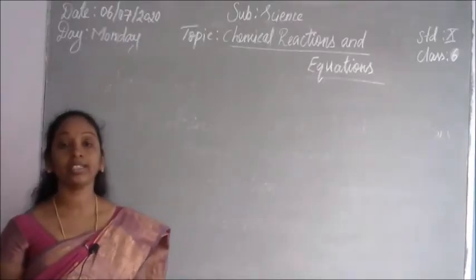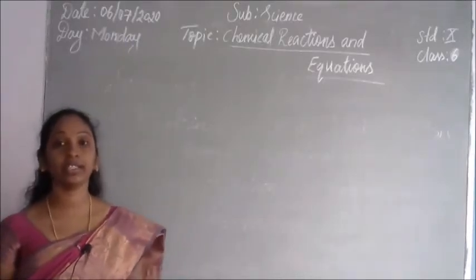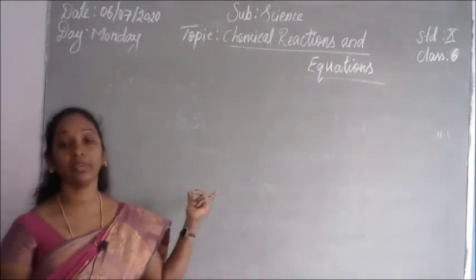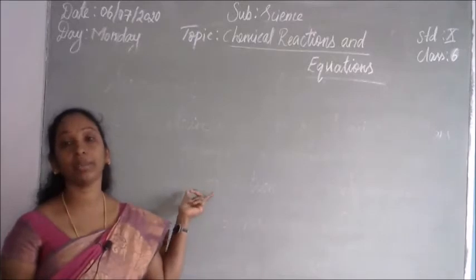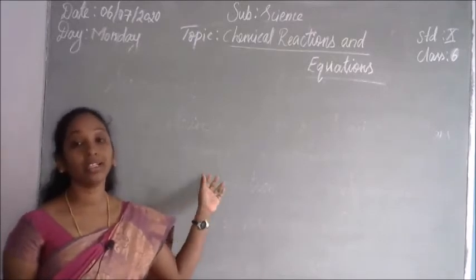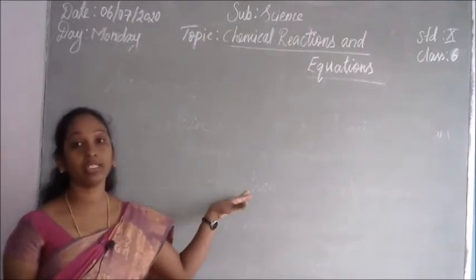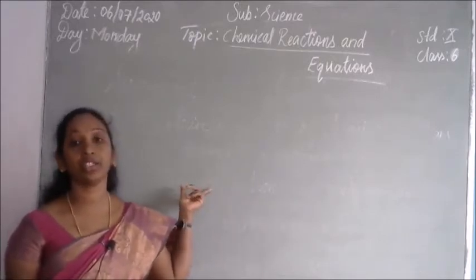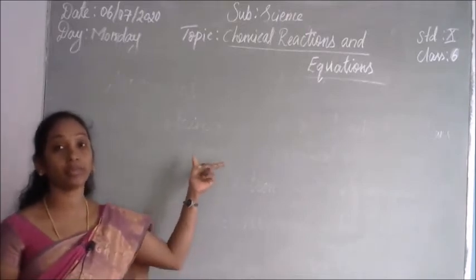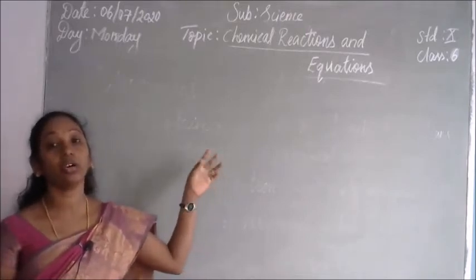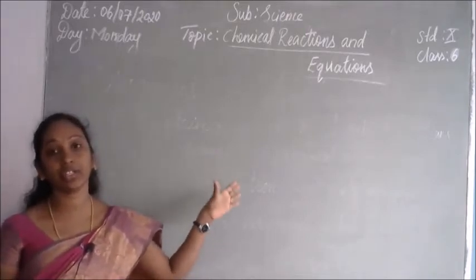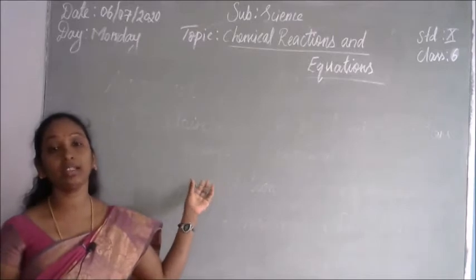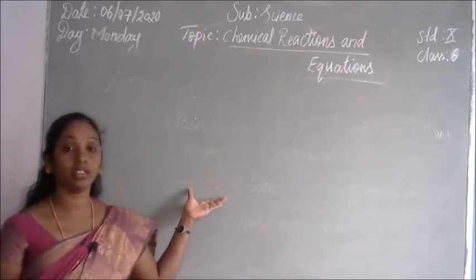Welcome to the online class session 6. In the previous class session 5, we discussed about chemical reactions and their types. That continuation is session 6. Today I am going to explain oxidation, reduction reaction, corrosion, and rancidity.